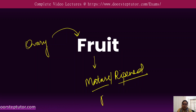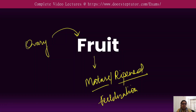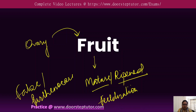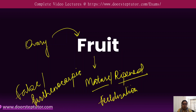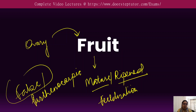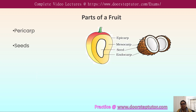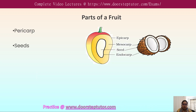The fruit is usually developed after fertilization. If a fruit is formed without the fertilization of the ovary, it is called a false fruit or a parthenocarpic fruit. If the fruit develops from the ovary itself, it is called a true fruit, which we will discuss shortly. First, we will discuss the parts of the fruit.